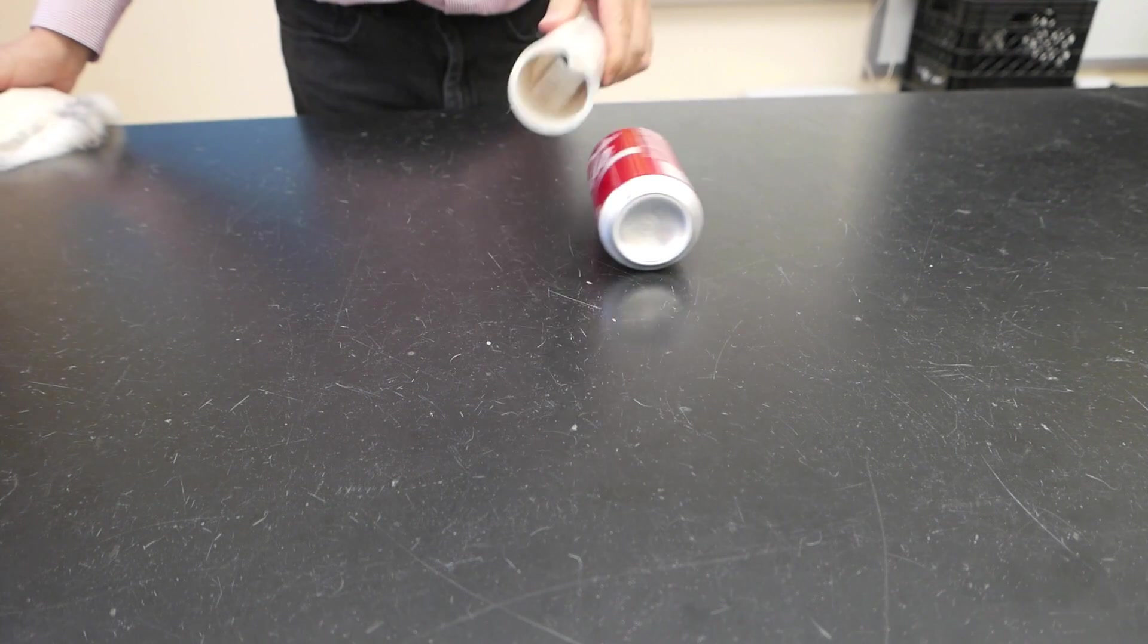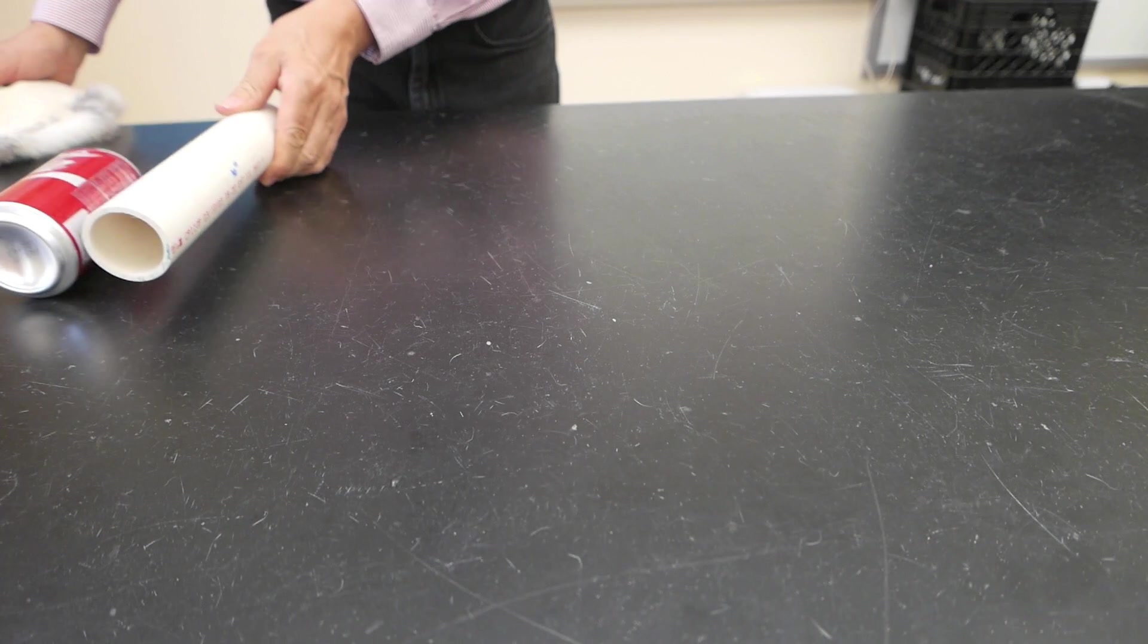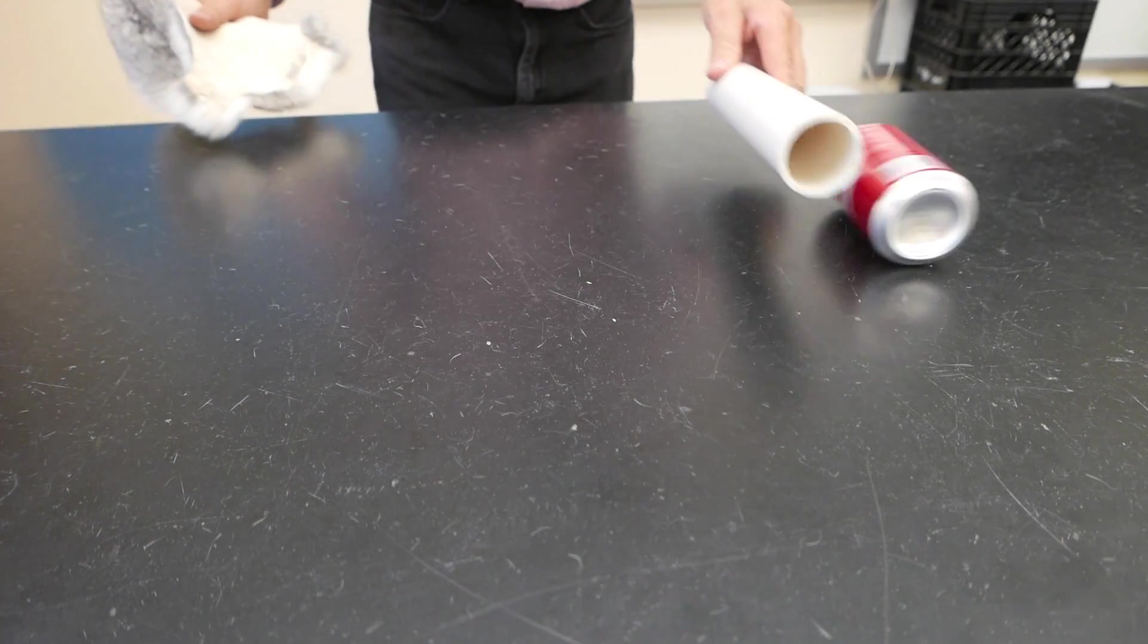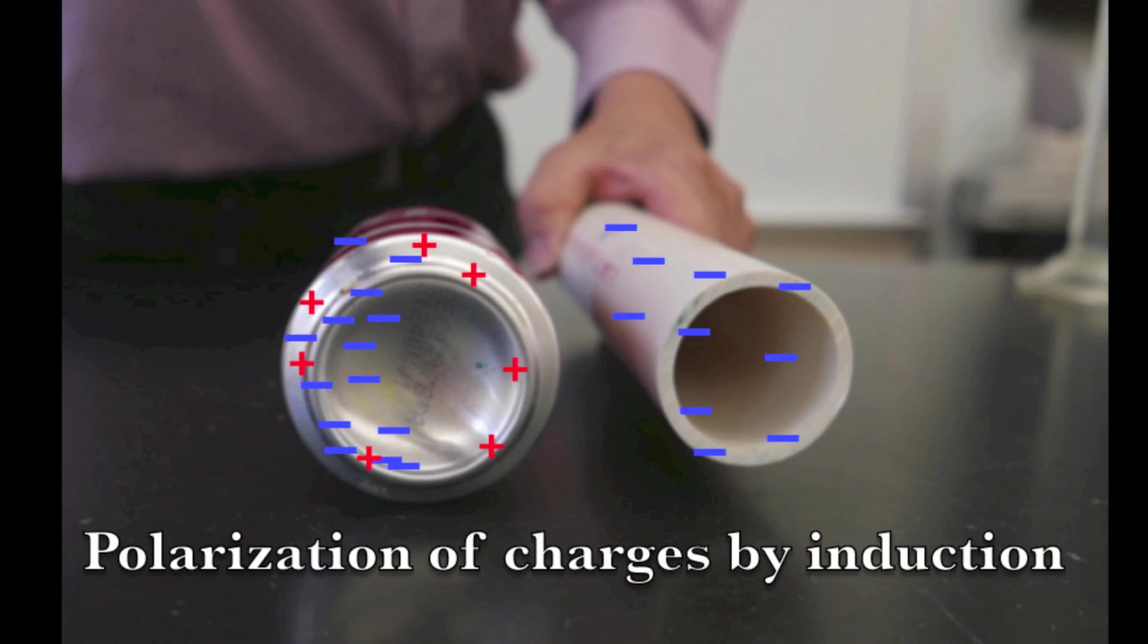By rubbing the PVC pipe I'm giving it a negative charge and I'm able to pull the can from one side of the desk to the other. In this case the electrons in the can move away from the charged pipe.